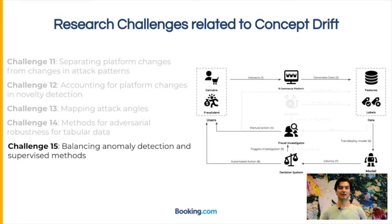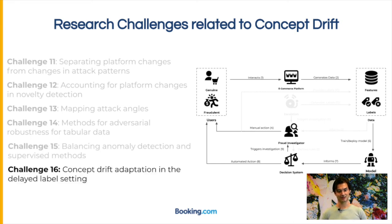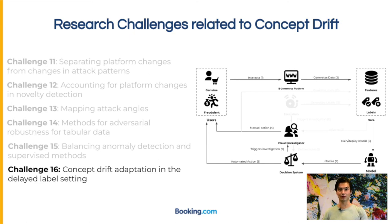Finally, there exist concept drift adaptation methods in the literature that try to make the model adapt to new types of data. However, it remains a big challenge to do this in the label delay setting, given that our labels come in late and have particular characteristics like this bimodal distribution due to the two different label sources. Investigating the effect of that on concept drift adaptation is still a big open challenge. Thank you — if you're interested in more about practical aspects of applied machine learning in fraud detection, please have a look at the paper or feel free to reach out.